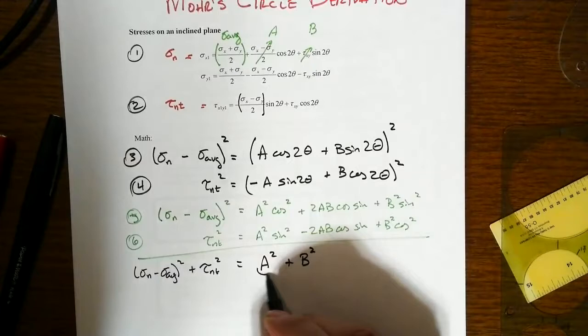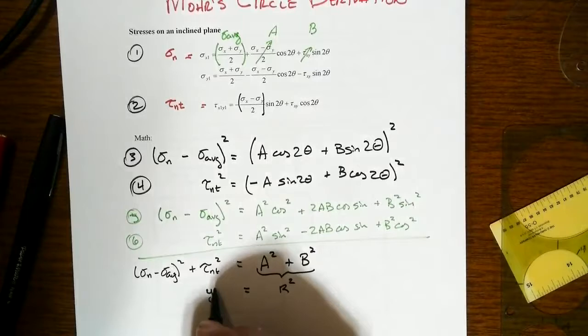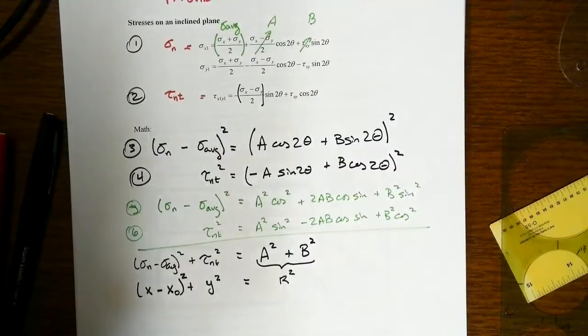So what do you end up with here? This is very cool. This is going to be the radius squared of our circle. And that will be our Y value. And then this other part is going to be our X, and there's our origin of our circle.